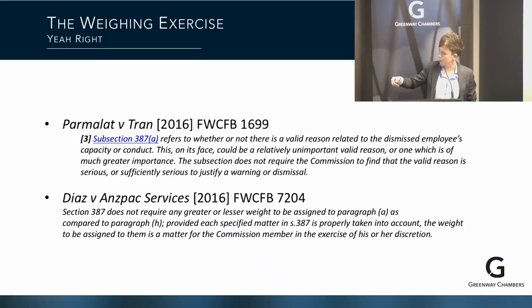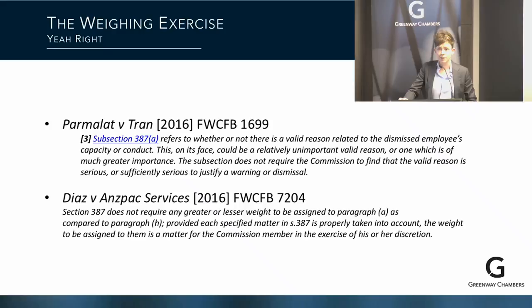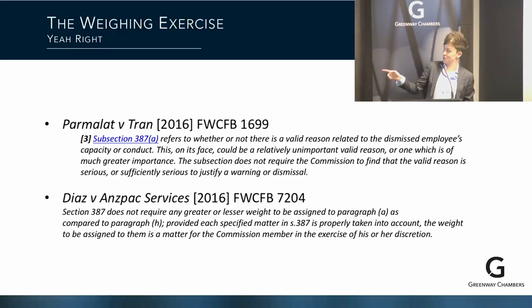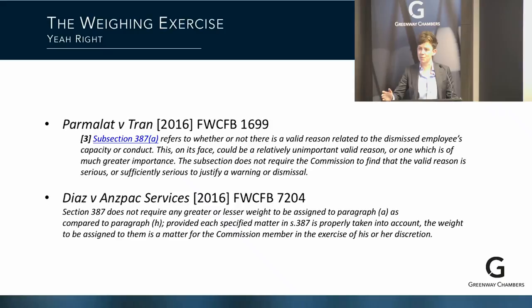In ANSPAC Services it's reiterated that no greater or lesser weight should be assigned to paragraph A. That takes Parmalat and Tran to its next step. On one level this makes sense: you can find a valid reason but all the procedural stuff means it's unfair — that's conventional. But it has to work the other way: if there's no valid reason but it's somehow the most procedurally fair dismissal in the world, it's somehow not unfair — that's obviously a nonsense. A threshold question has to be the existence of some justification for the dismissal.